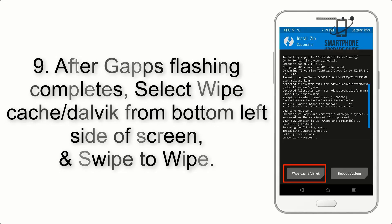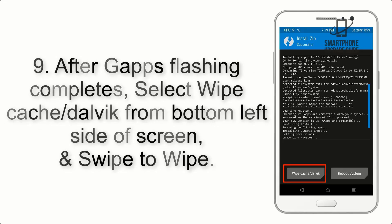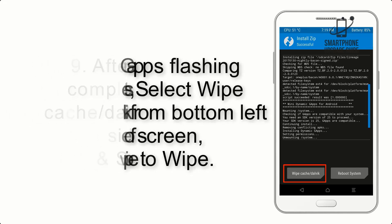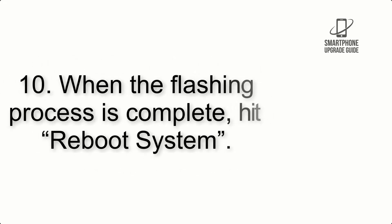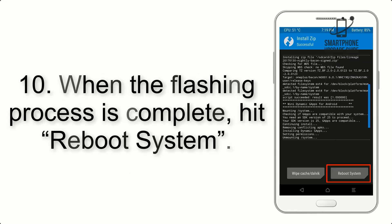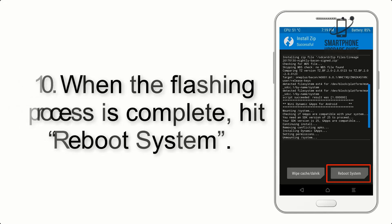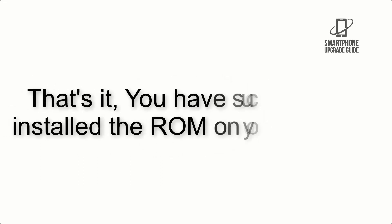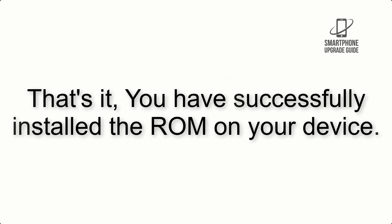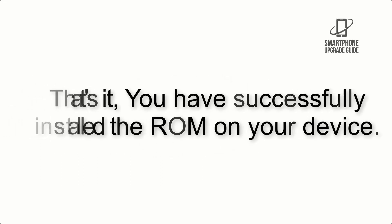Step 8: Flash the GApps zip package in the same manner. Step 9: After GApps flashing completes, select Wipe Cache and Dalvik from the bottom left side of the screen and swipe to wipe. Step 10: When the flashing process is complete, hit Reboot System. That's it — you have successfully installed the ROM on your device.